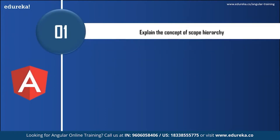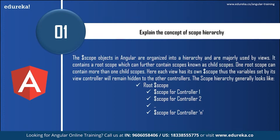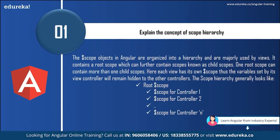Now stepping into intermediate level questions — explain the concept of scope hierarchy. Scope objects in Angular are organized into a hierarchy and are majorly used by views. There is a root scope which can further contain scopes known as child scopes. One root scope can contain more than one child scope. Each has its own scope, so variables set by its view controller will remain hidden to other controllers.